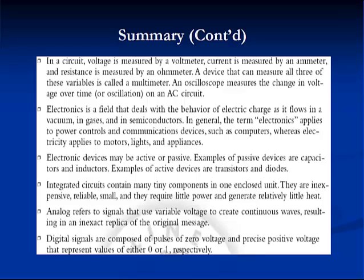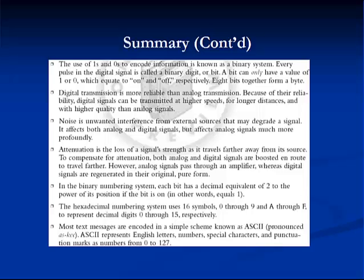Analog refers to signals that use variable voltage to create continuous waves, resulting in an inexact replica of the original message. Digital signals are composed of pulses of zero voltage and precise positive voltage that represent values of either zero or one. The use of ones and zeros to encode information is known as a binary system. Every pulse in a digital signal is called a binary digit, or bit, which can only have a value of one or zero — equating to on and off, respectively. Eight bits together form a byte.